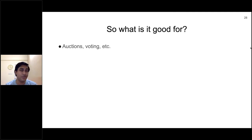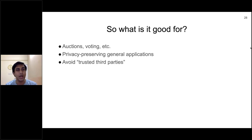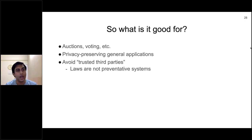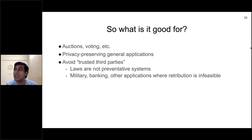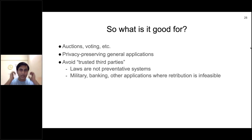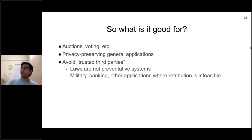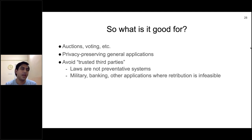Under current circumstances, this stuff is good for certain types of applications like calculating average salaries, and certain scenarios like military and banking where you need to avoid trusted third parties. Laws are not preventative mechanisms — a law against murder doesn't prevent murder. The military can't say 'you stole my information' after the fact. You need preventative systems, not retributive ones. In those cases, secure computation works.